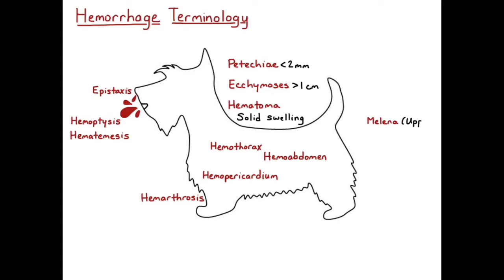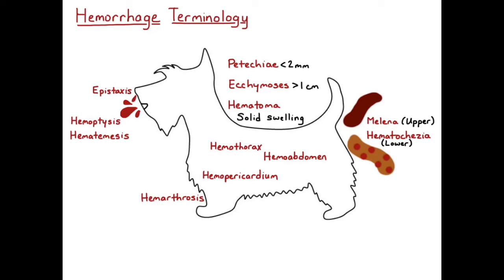Melena is the term used to mean there are dark, tarry feces or dark, sticky feces. Usually the feces are diffusely dark and sticky or tarry, and that means the blood has been digested and altered. Hematochezia is used to describe fresh blood that is splotchy throughout the feces, and this is indicative of a lower GI hemorrhage.